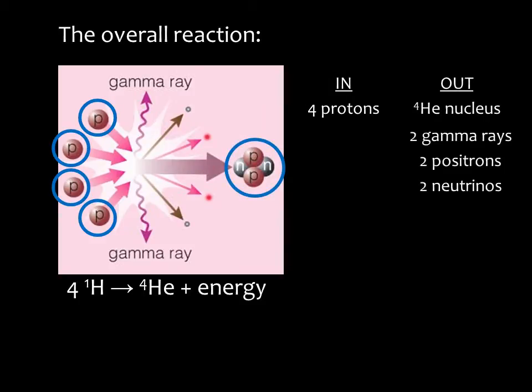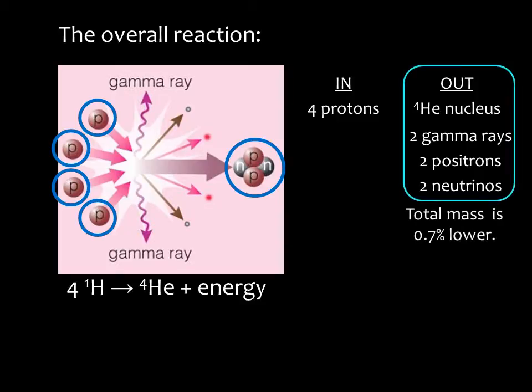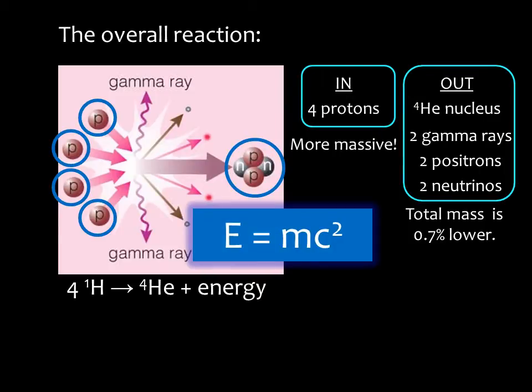The gamma rays and subatomic particles carry off the energy released in the reactions. Fusion of hydrogen into helium generates energy because a helium nucleus is slightly less massive than the combined mass of the four hydrogen nuclei. When the four hydrogen nuclei fuse into helium, a little of the mass disappears. The disappearing mass becomes energy in accord with Einstein's formula, E equals mc squared.